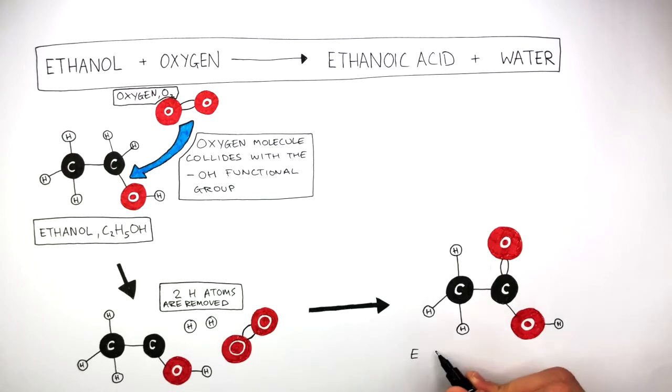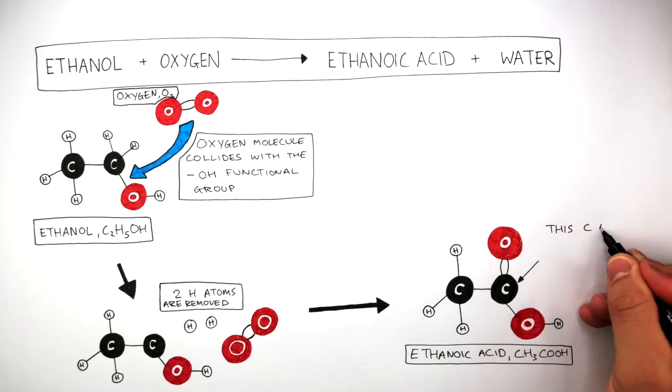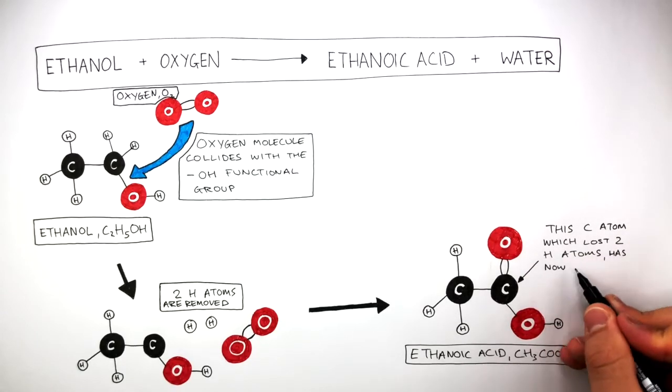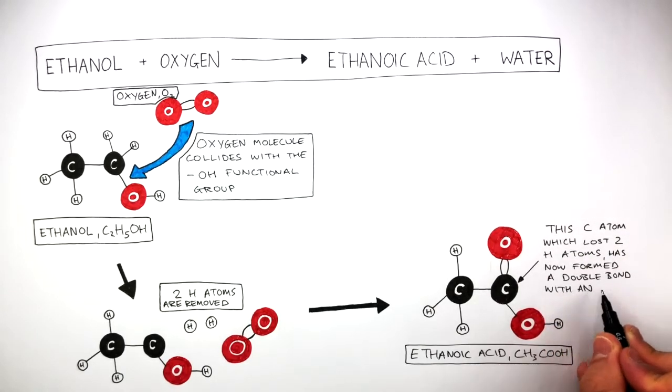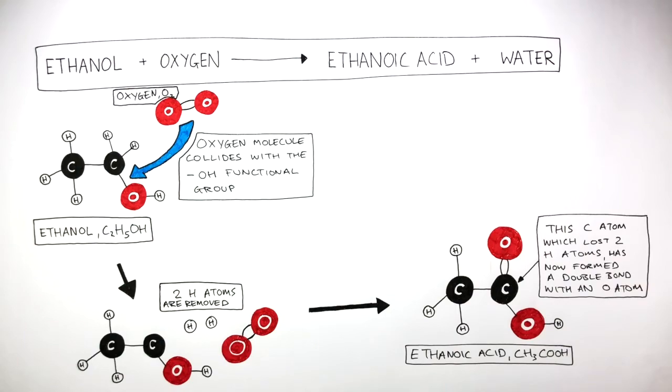This has formed ethanoic acid, CH3COOH. We can see how this carbon atom, which lost two hydrogen atoms, has now formed a double bond with an oxygen atom. This is how an ethanol molecule is oxidized.